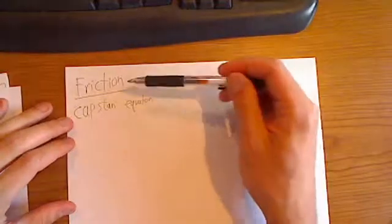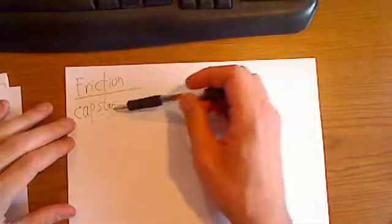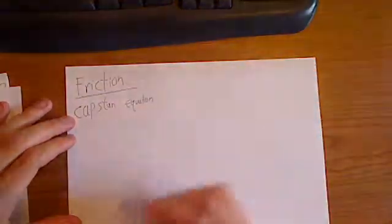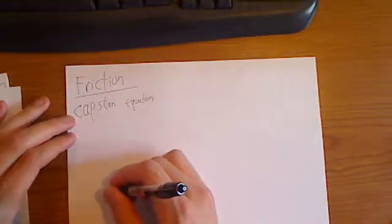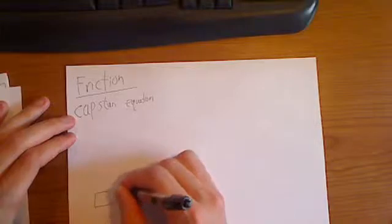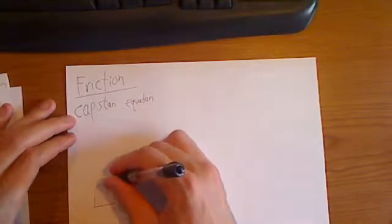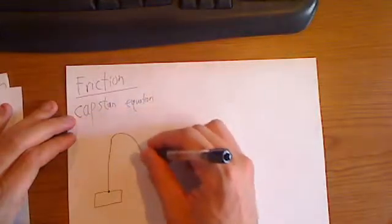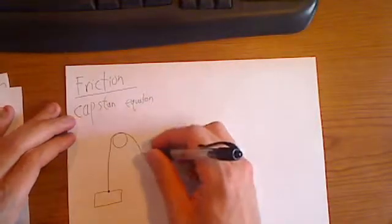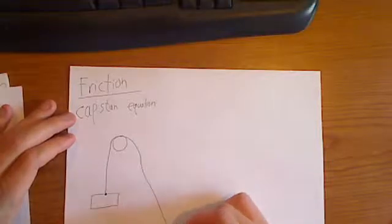There's one last question on friction in the final and it's on what's called the capstan equation. This is what happens when you have something on a rope, some mass or box on a rope.